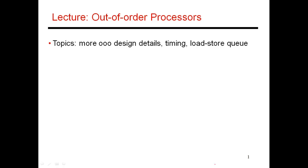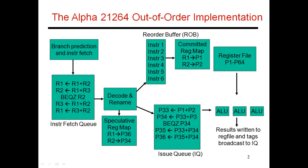In the last few videos, we described a basic out-of-order design and talked about what happens in each of the different stages. In this set of videos, I'm going to discuss a few more design details and integrate a load store queue into this design. First up, I want to talk about what leads to stalls in every single stage.